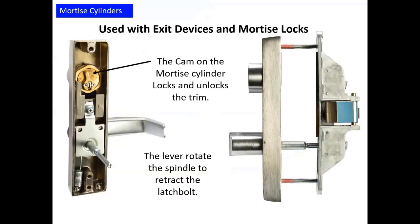Here is a good example of how the cam works. Here is the outside trim of an ET on the next device. The cam is on the back of the cylinder; as the cam is turned, it rotates and moves that locking slide up and down, allowing you to rotate that lever and gain access to the exit device.